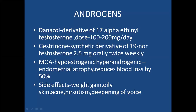Androgens: danazol is a derivative of 17-alpha ethinyl testosterone, dose is 100 to 200 milligrams per day, but it is not used because of androgenic side effects — deepening of the voice and hirsutism. Gestrinone is a synthetic derivative of 19-nor testosterone, dose is 2.5 milligrams orally twice daily. The mechanism of action causes hypoestrogenic, hyperandrogenic state and endometrial atrophy, resulting in 50 percent reduction in blood loss. Side effects are weight gain, oily skin, acne, hirsutism, and deepening of voice, making it unacceptable.